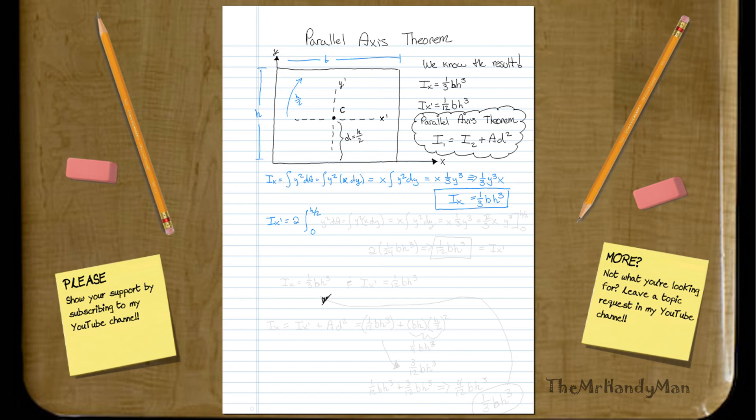So, y squared dA, and you'll realize that this is all the same process. y squared x dy equals x y squared dy, which, once again, you're going to have x one-third y cubed, which will, once again, equal...